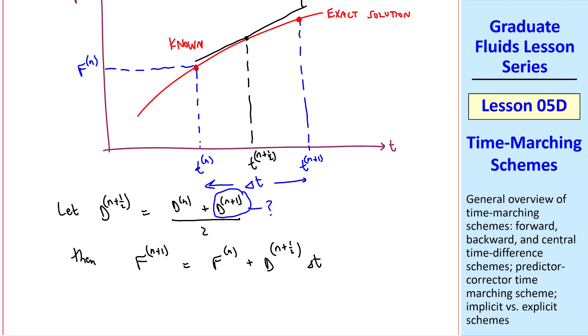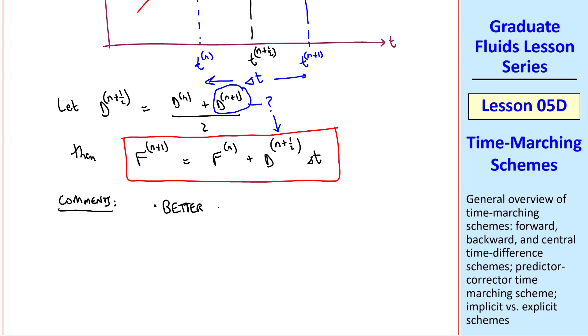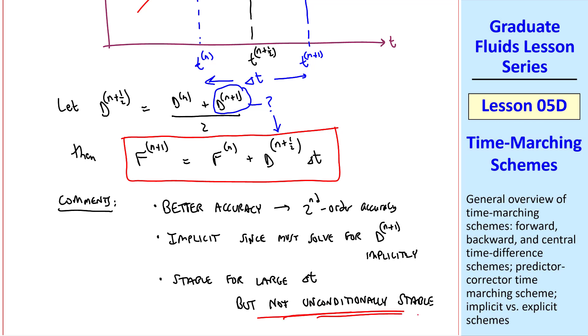Here we have the same situation as we had with the backward difference scheme. Namely, we don't know dn plus 1, which means we don't know dn plus 1 half either. So again, we may have to iterate some comments. Compared to the first two schemes, this one has better accuracy. In fact, it turns out to be second-order accuracy. It's still implicit, like the backward scheme, since we again must solve for dn plus 1 implicitly, either with iteration or some kind of approximation, if D is not known exactly. This turns out to be stable for large delta t, but it's not unconditionally stable. It can still become unstable if delta t is very large.